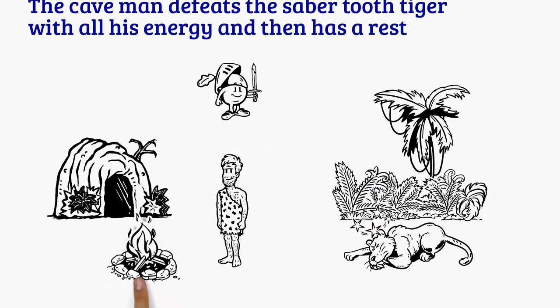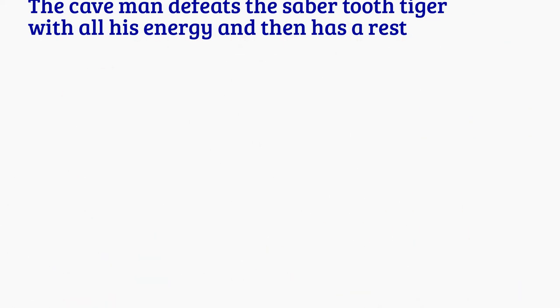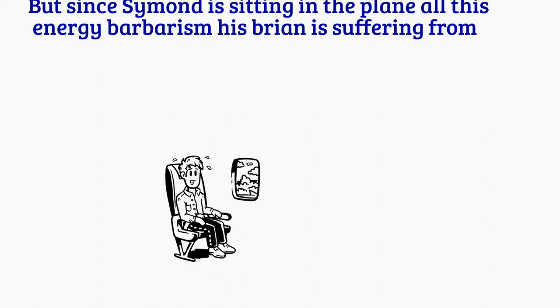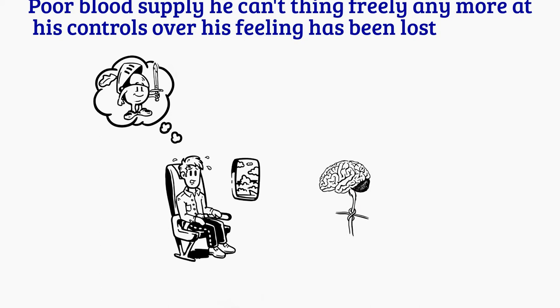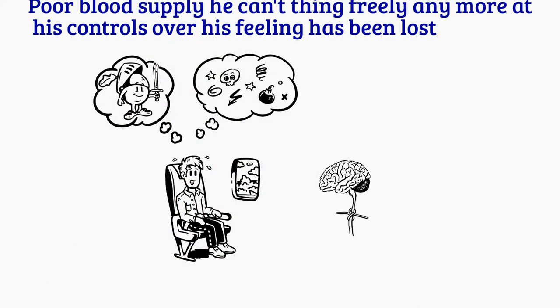But since Simon is sitting in the plane, all this energy bothers him. His brain is suffering from poor blood supply. He can't think clearly anymore and his control over his feelings has been lost.